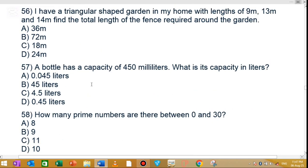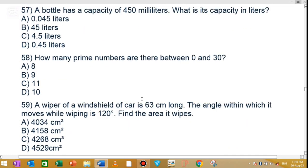Question number 56: I have a triangular shaped garden in my home with lengths of 9 meter, 13 meter, and 14 meter. Find the total length of the fence required around the garden. The correct answer is 36 meters. The perimeter is 9 plus 13 plus 14, which equals 36 meters.